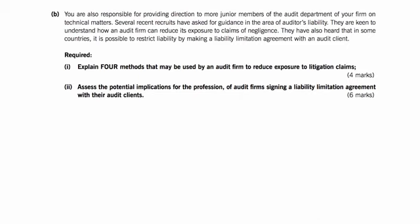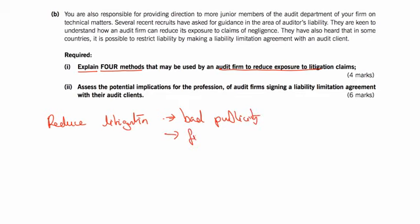Let's have a look at this question. Four methods — explain them, don't just state them — that could be used by an audit firm to reduce litigation claims. I think the way I'd start off is by addressing why you want to reduce litigation. The reason is bad publicity and the financial effect, which could even mean the closing down of the whole firm if something goes wrong, as has been proven in big cases. It's a massively important thing.